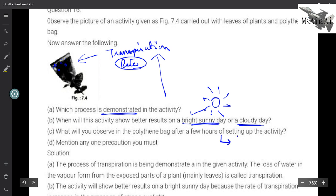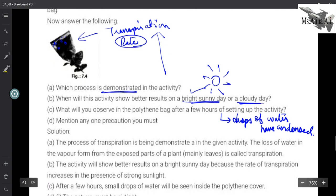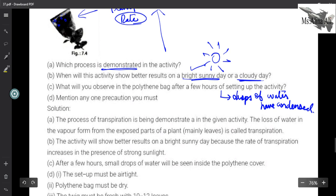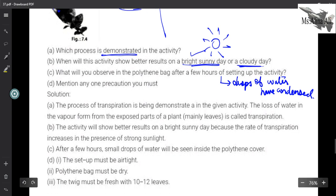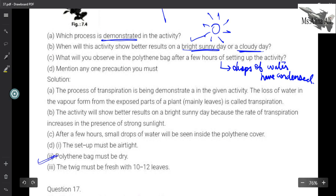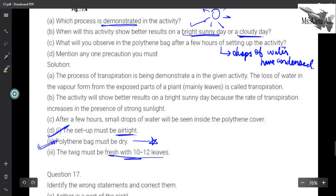Next, what will you observe in a polythene bag after a few hours? We will observe tiny drops - drops of water have condensed. This is what you will observe. Mention any one precaution that you must take during this activity. While performing this activity, what should you keep in mind? First thing is the polythene you take should be dry, there should not already be water inside, otherwise you cannot figure it out. And the polybag you attach should be tightly packed so that it is airtight. And the twig that you are taking should be fresh. These are some precautions but this is the very important precaution.